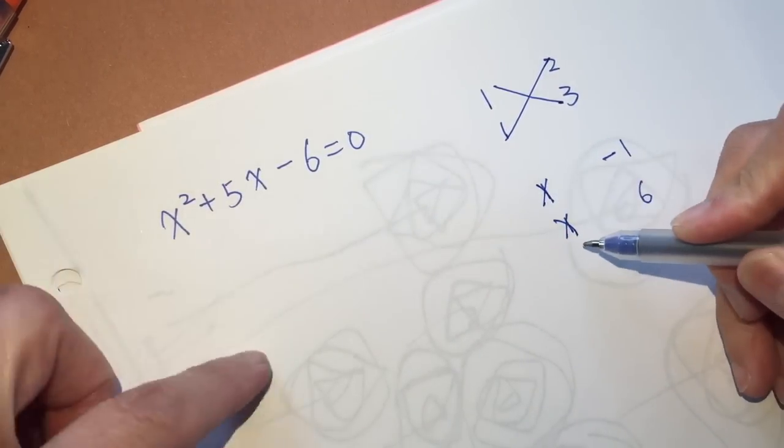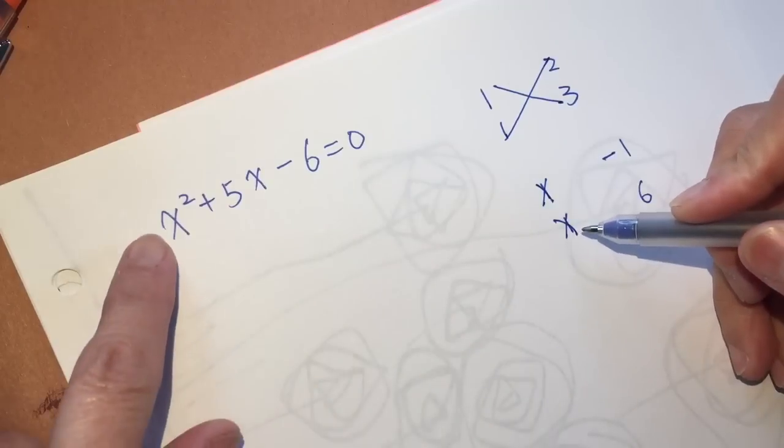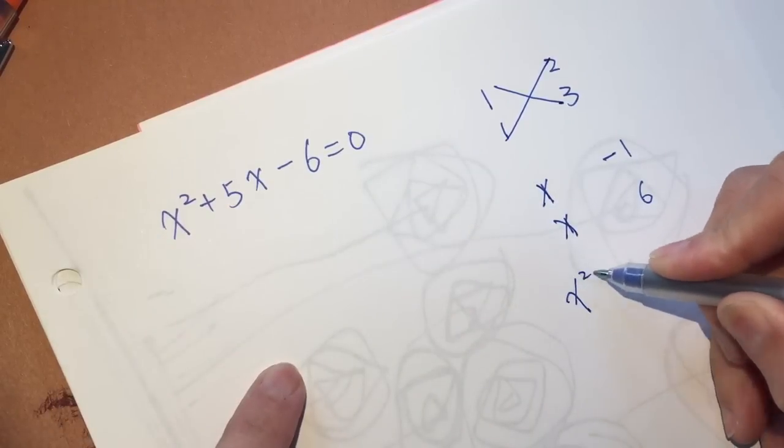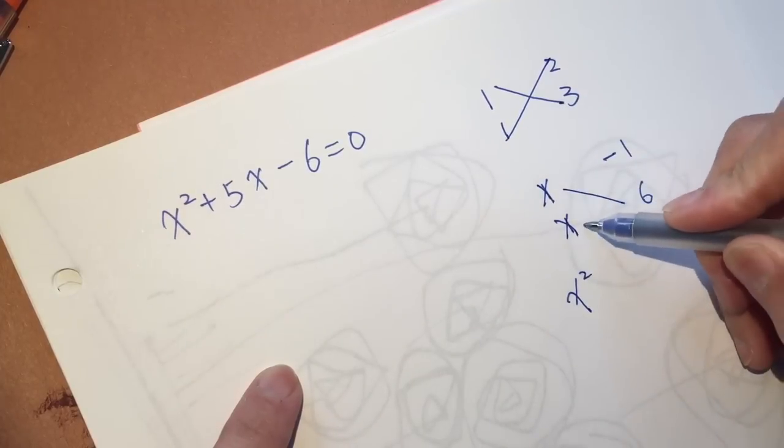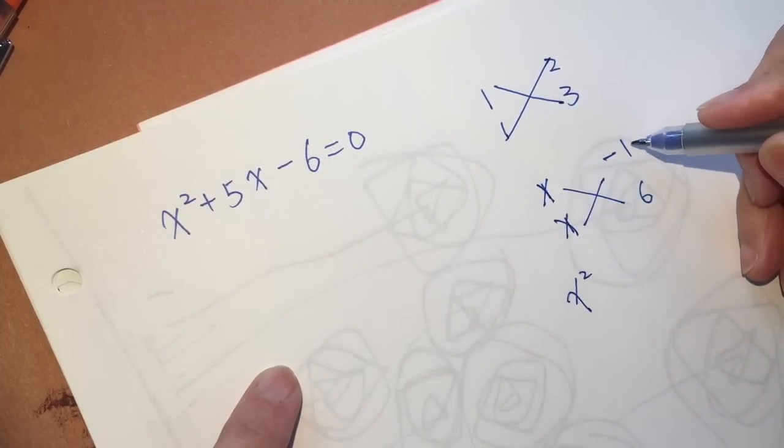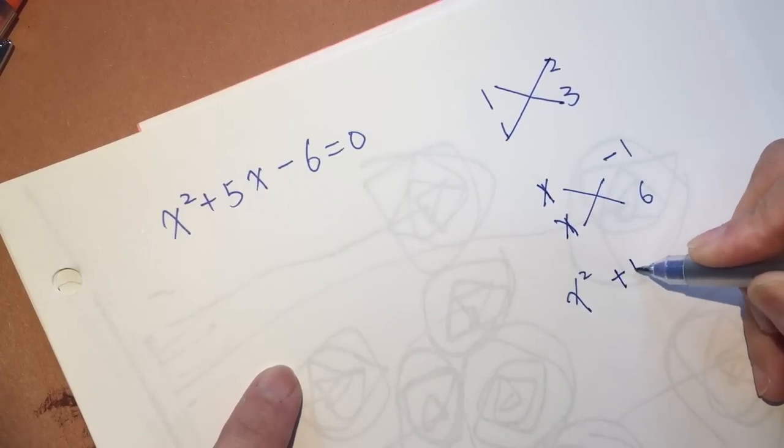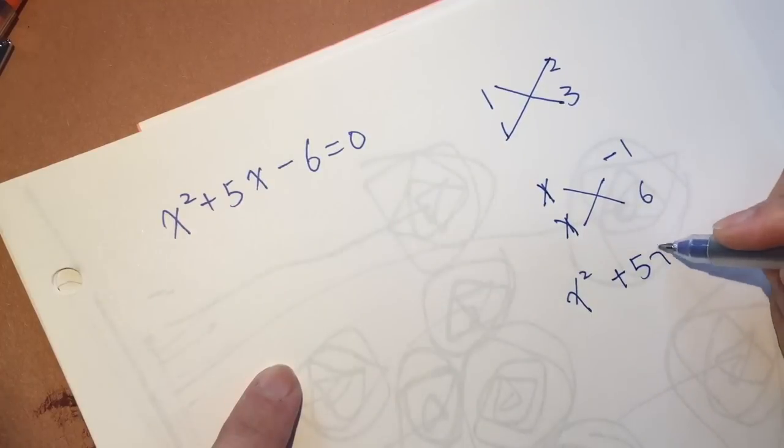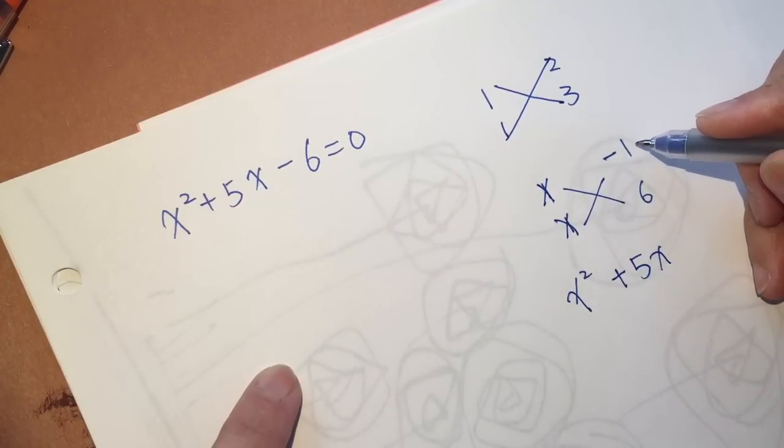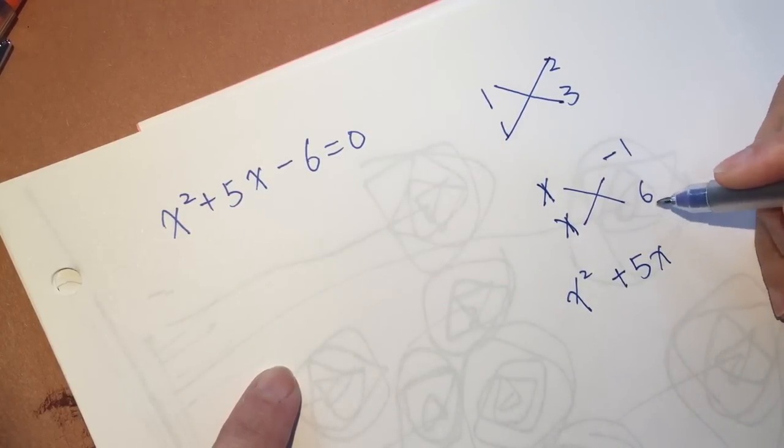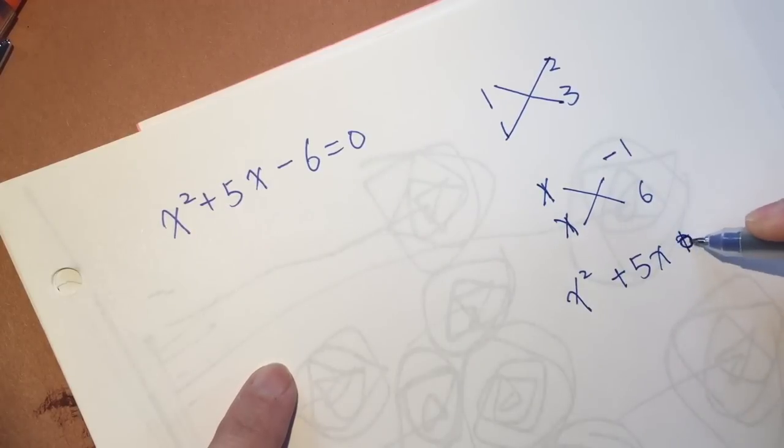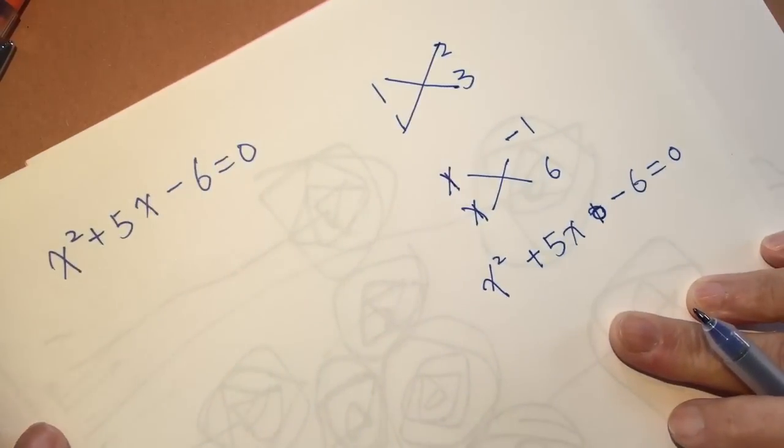x times x, one times one is x squared. These and these, positive six and negative one makes positive five x. And negative one times six is negative six. So I am factoring it.